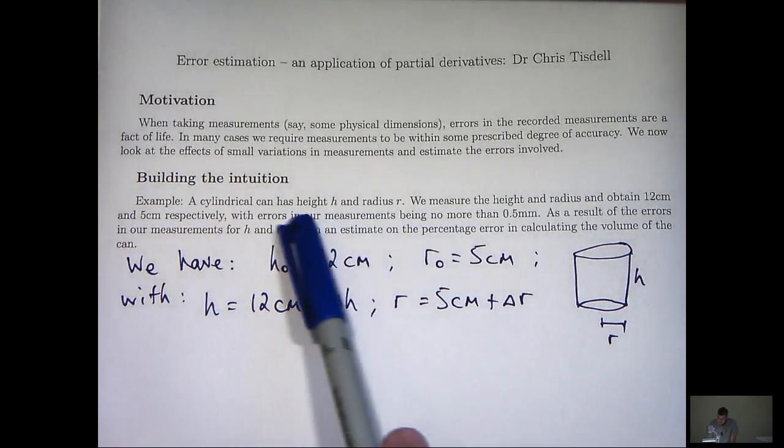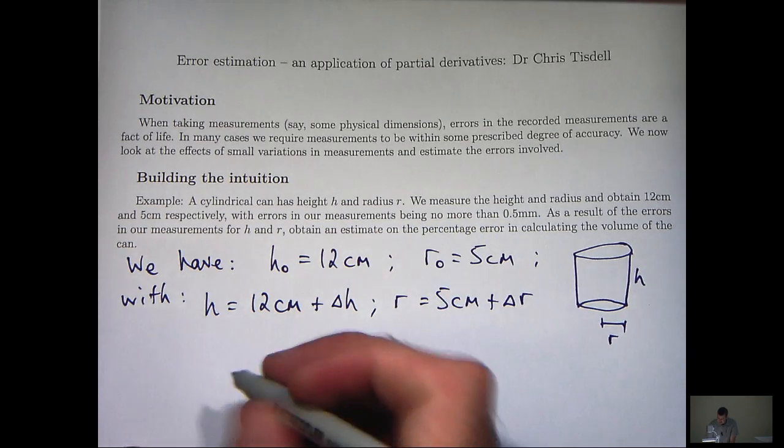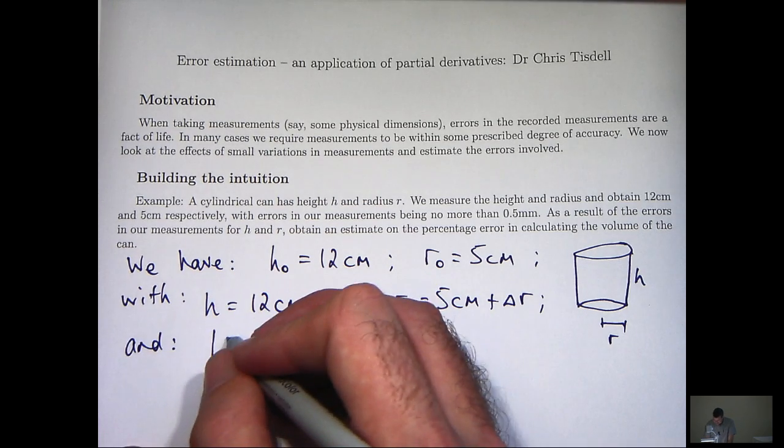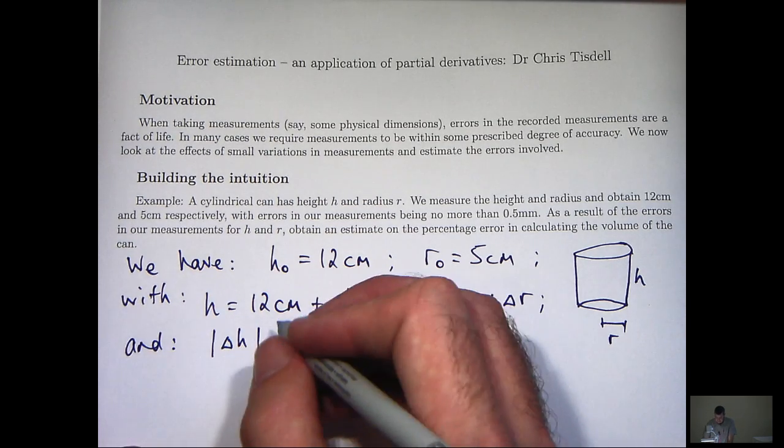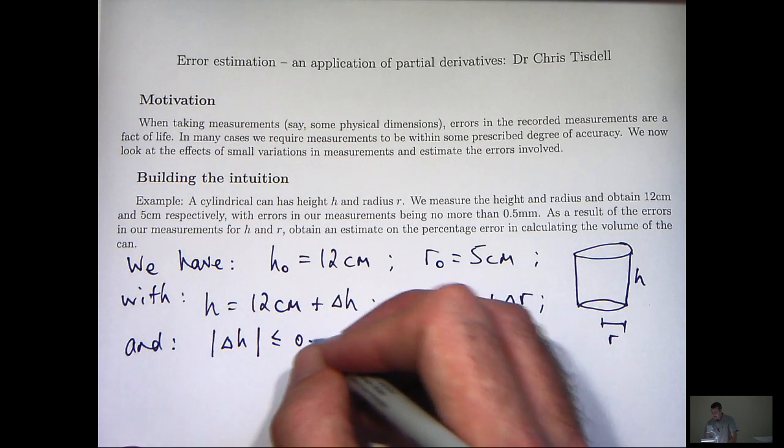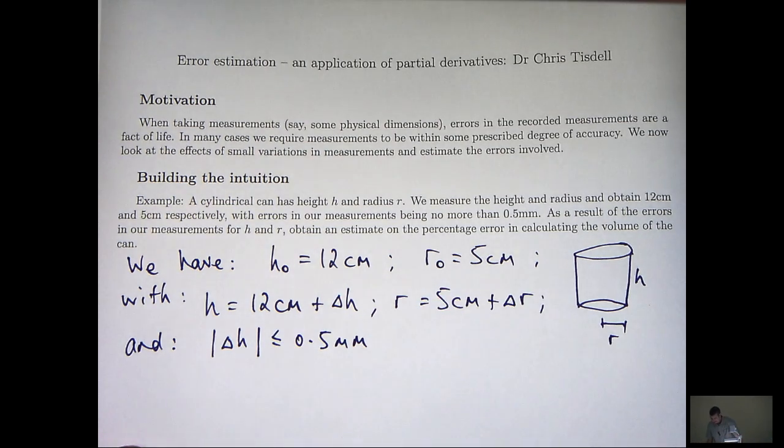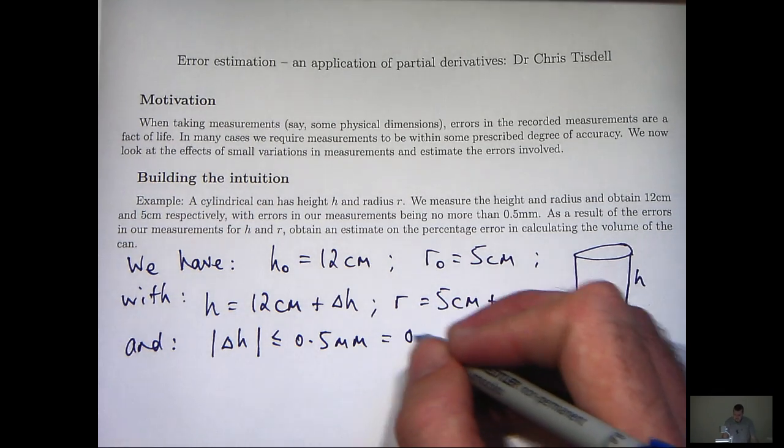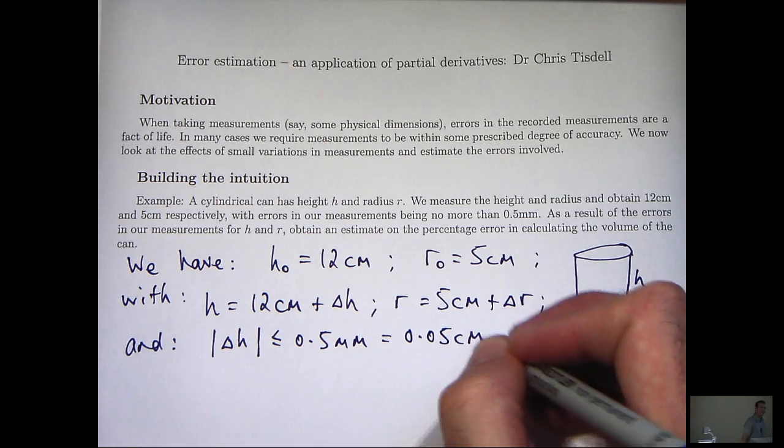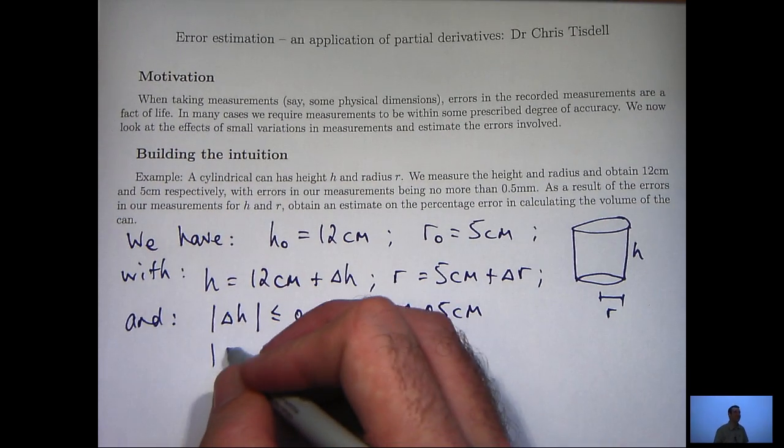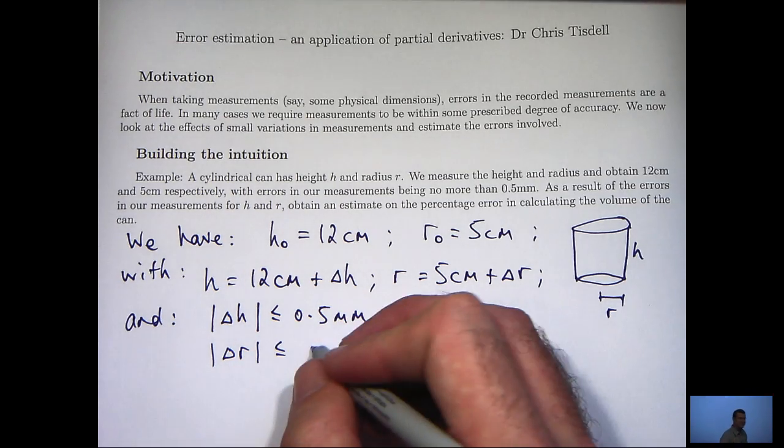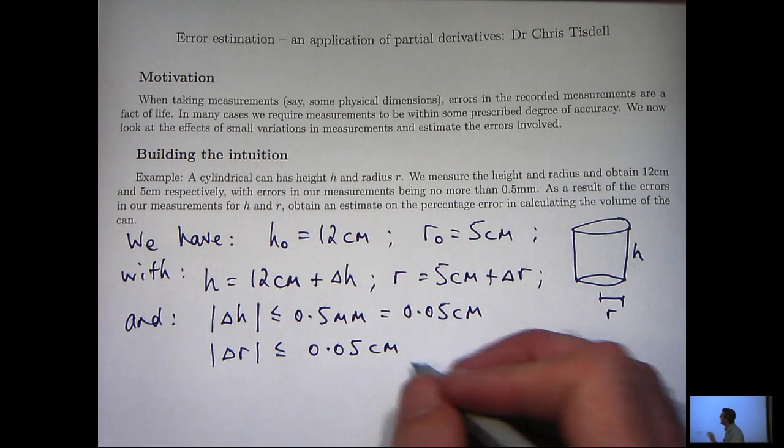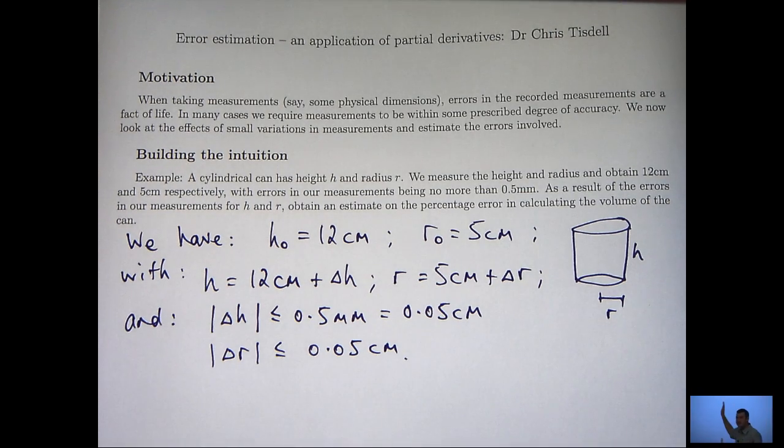And the same for the radius, that has a small error too. Now, all we know is that the errors in our measurements are no more than half a millimeter. So all we can say is that we have the following estimates on the error for our measurement of the height. And so let's just convert that all to the same set of units. And similarly, we have the following estimate for our measurement for the radius.